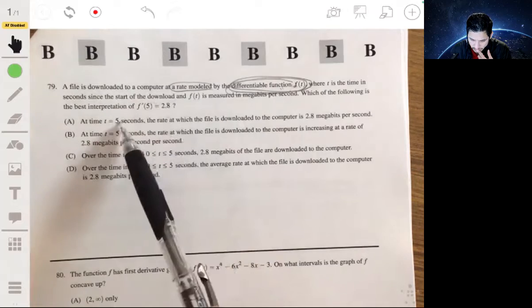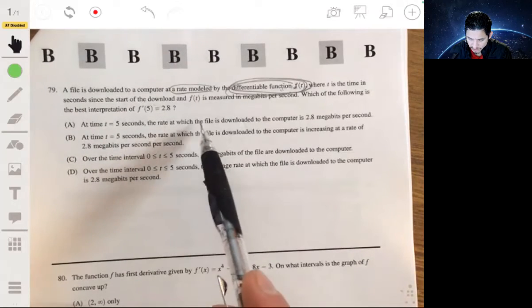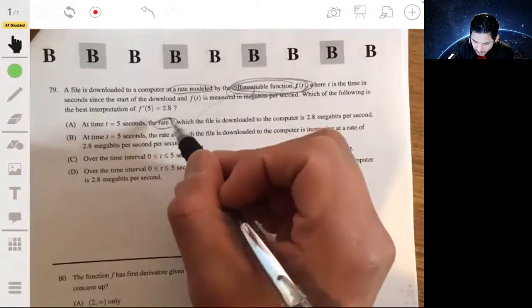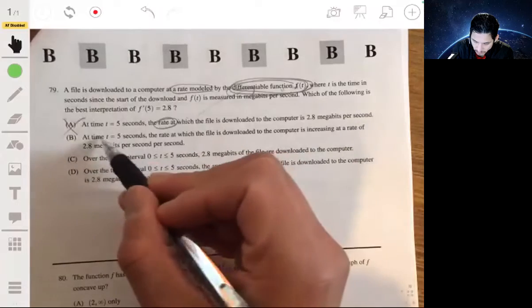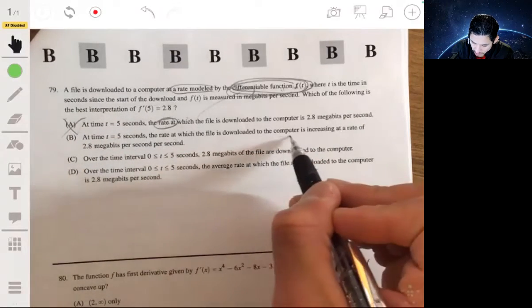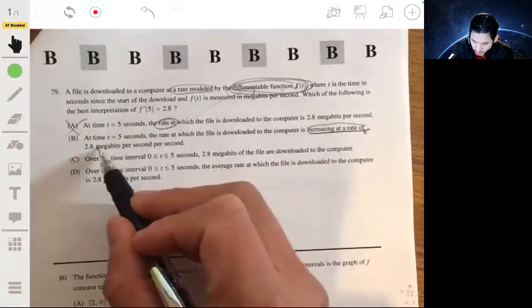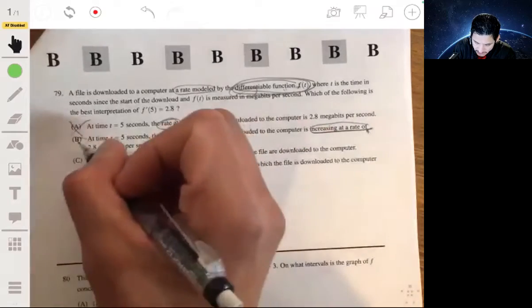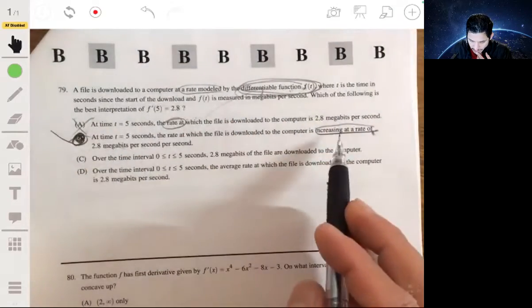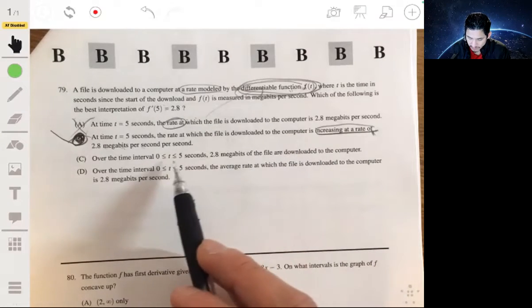So for a, at time equals five seconds, the rate at which the file is, yeah so this would be only f of t. F prime of t would be the rate of the rate. It's not going to be a. At time equals five seconds, the rate at which the file is downloaded to the computer is increasing at a rate of 2.8 megabits per second per second. Yes, the answer would be b. We're talking about again, it's talking about the rate of the rate. And yeah, c and d won't be.